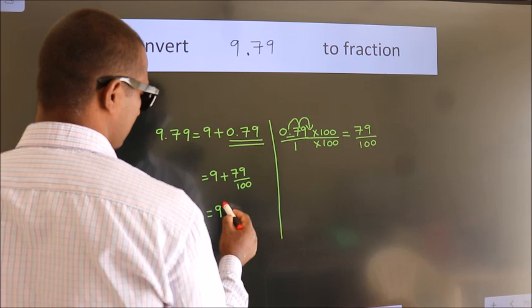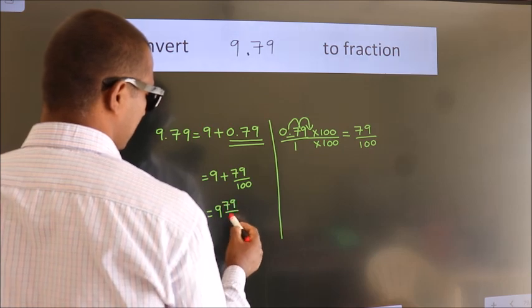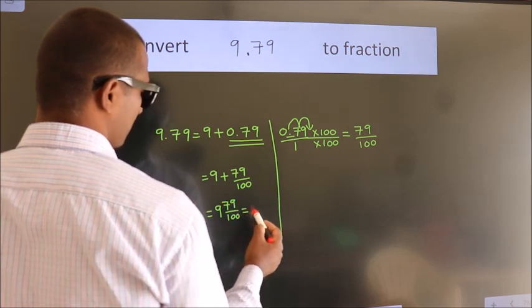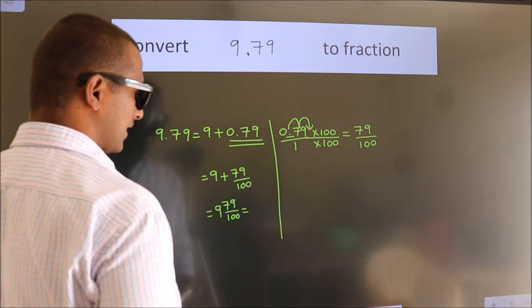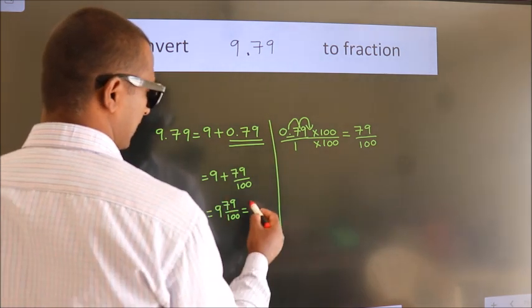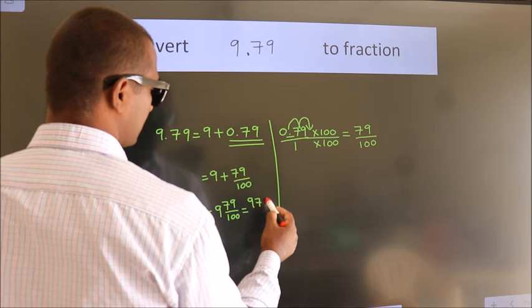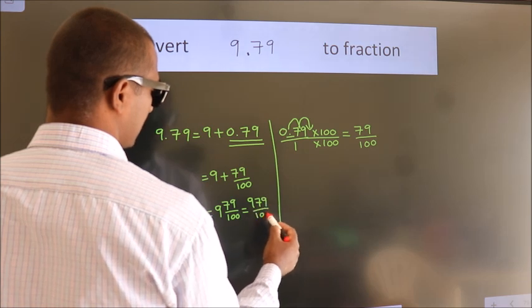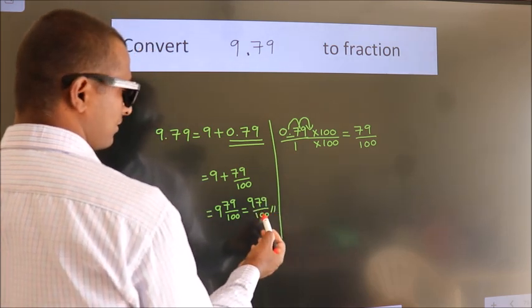In mixed fraction it is 9 and 79 over 100. And in improper fraction it is 9 into 100, 900 plus 79, 979 by 100 is our fraction.